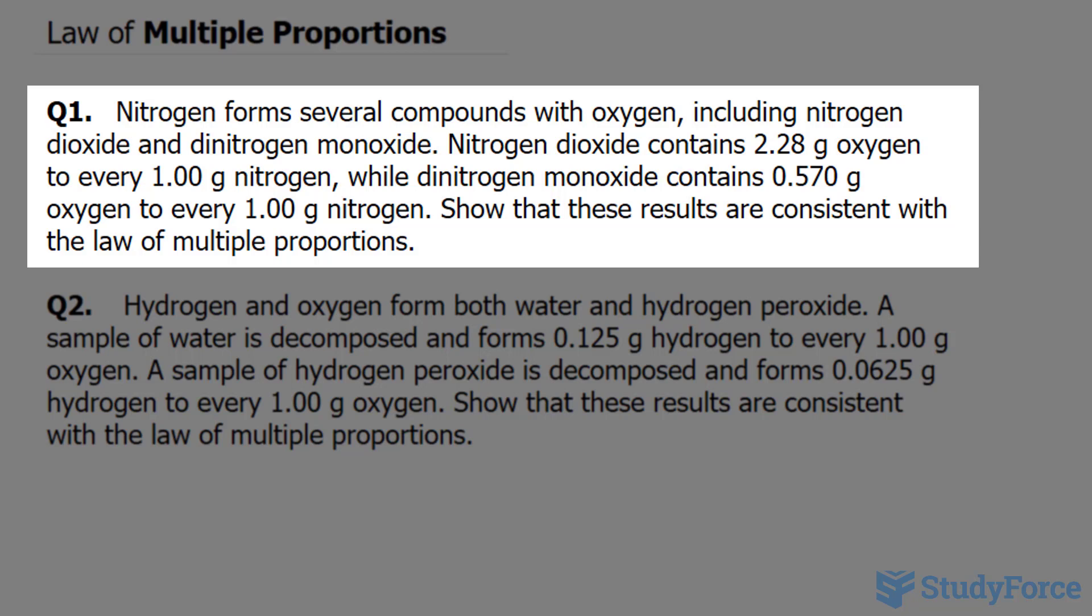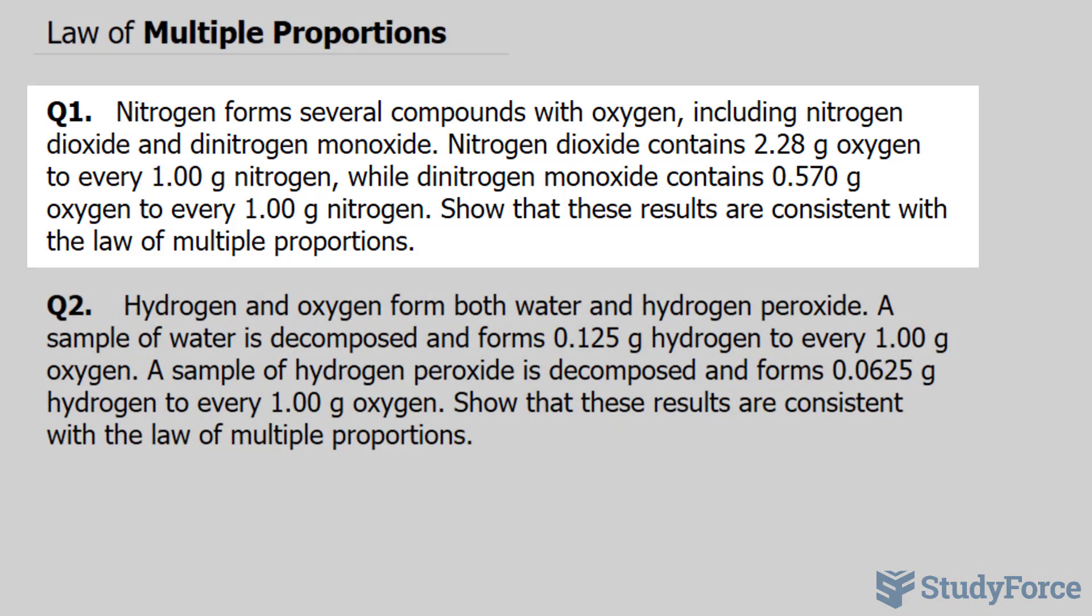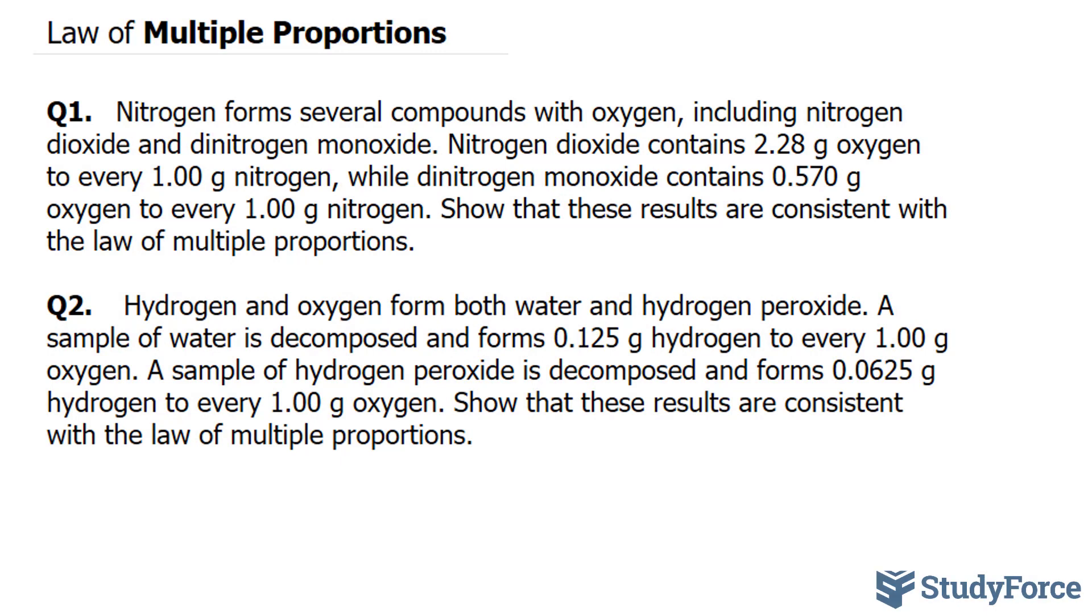Nitrogen dioxide contains 2.28 grams of oxygen to every 1.00 grams of nitrogen, while dinitrogen monoxide contains 0.57 grams of oxygen to every 1 gram of nitrogen. Show that these results are consistent with the law of multiple proportions.